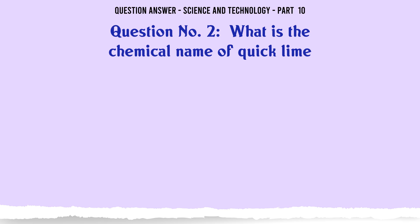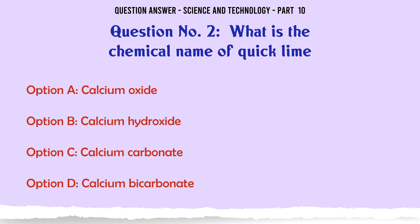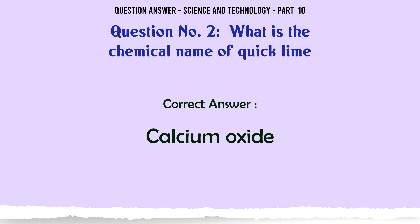What is the chemical name of quicklime? A. Calcium oxide. B. Calcium hydroxide. C. Calcium carbonate. D. Calcium bicarbonate. The correct answer is Calcium oxide.